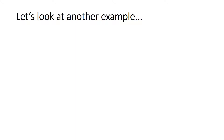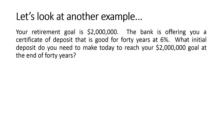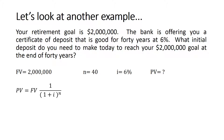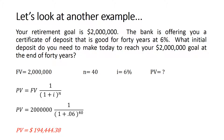Now let's try another example. Your retirement goal is $2 million. The bank is offering you a certificate of deposit that is good for 40 years at 6%. What initial deposit do you need to make today to reach your $2 million goal at the end of 40 years? The future value is $2 million, n is 40 years, I is 6%, and we are solving for the present value. Plugging into the equation, you get $194,444.38 — this is the amount you should start investing today.